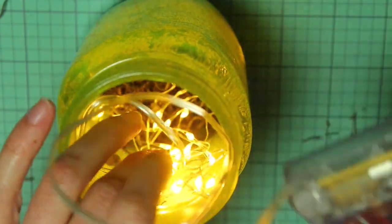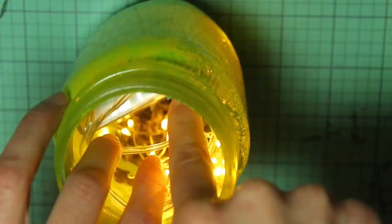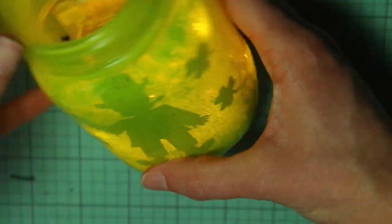So I'm just going to put the battery pack in now making sure that the switch is on the top side where I can get to it without taking it out of the jar. Make sure everything is inside. Then you can put the lid on.